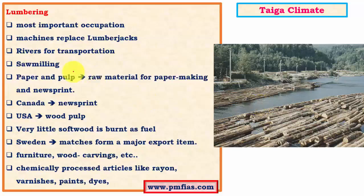At the sawmills, logs are converted into wood pulp, newsprint, and various other raw materials. Canada leads in newsprint production while the USA leads in wood pulp production. Wood pulp is used for making cardboard, paper, and similar products. All these timber industry products are exported to the rest of the world, and very little softwood is burnt as fuel because of its great economic importance.